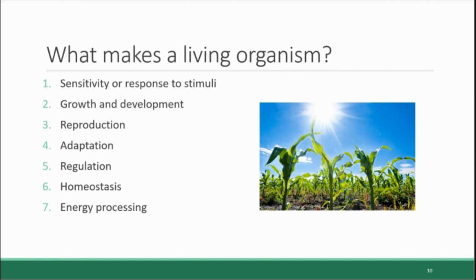Living things also process energy — they get energy from sources in their environment and convert it into useful forms to support all of their functions. Plants, for example, obtain their energy through photosynthesis, where they capture the energy of sunlight and transform it into energy-rich chemical compounds. We will talk about this process in more detail later.